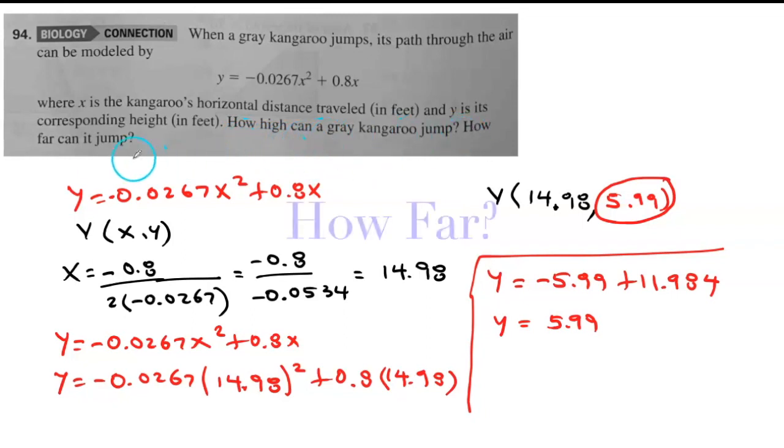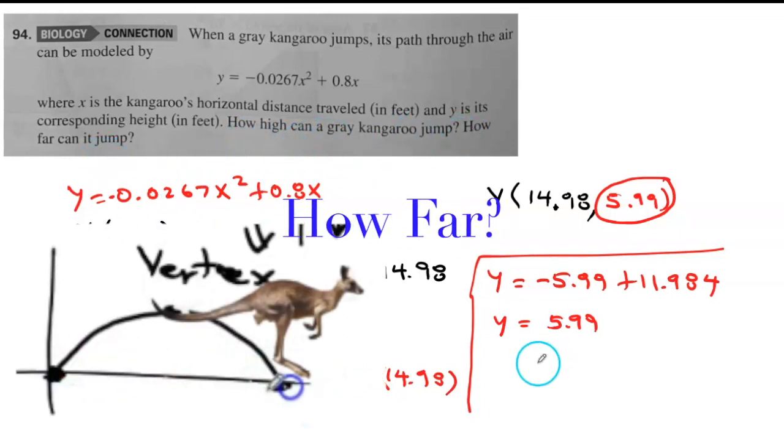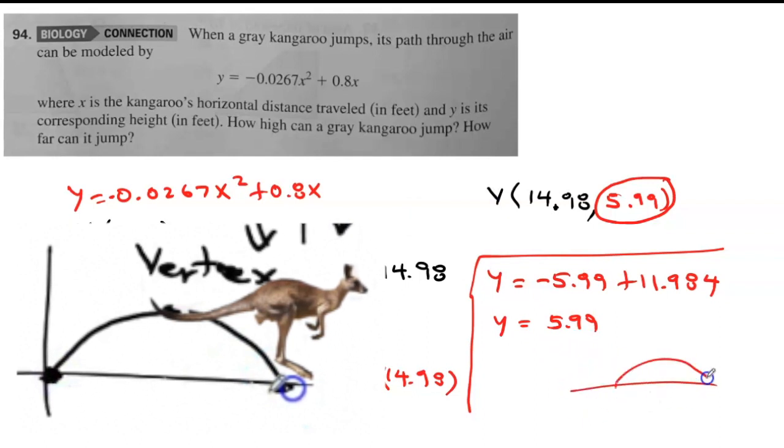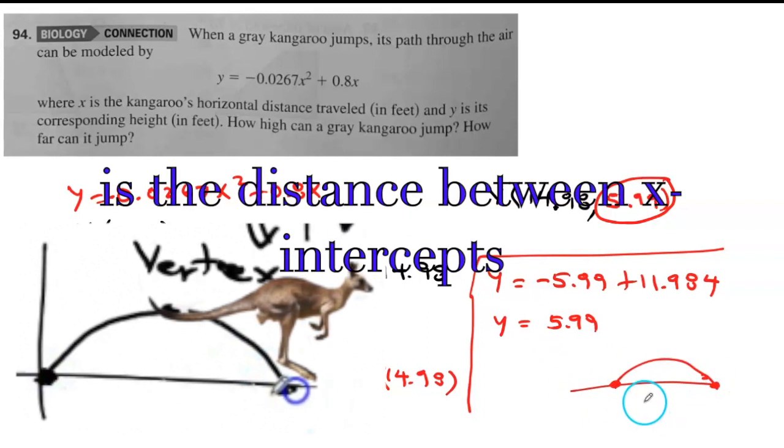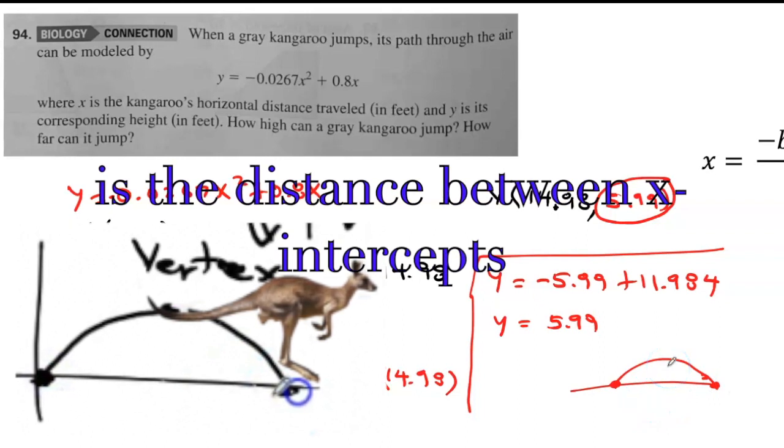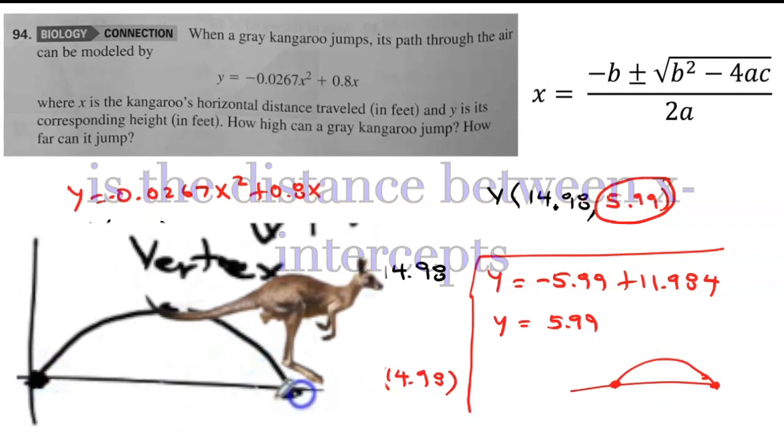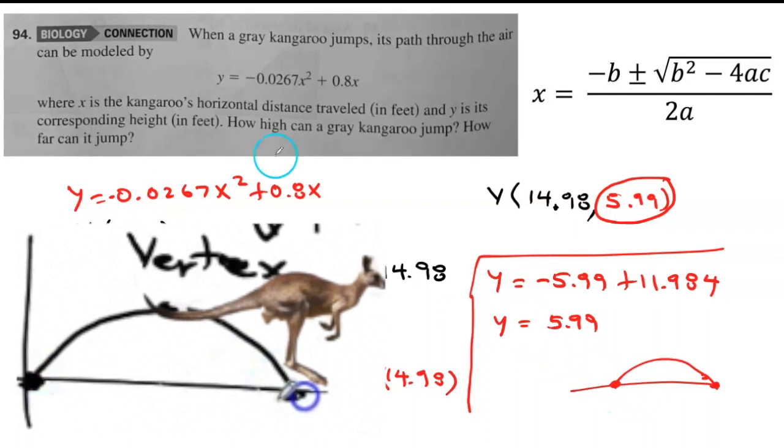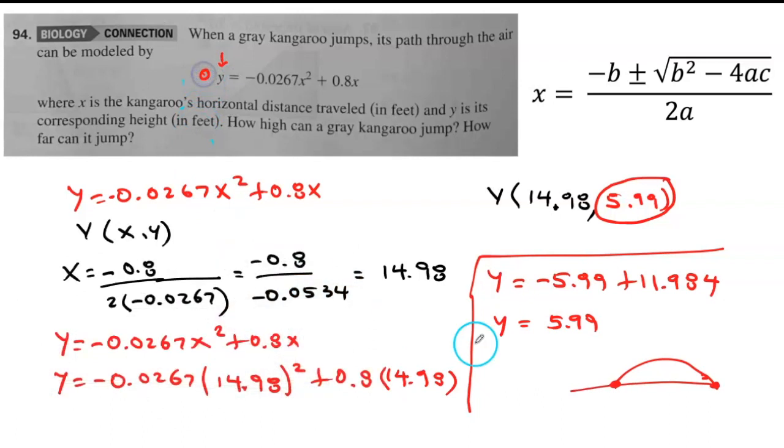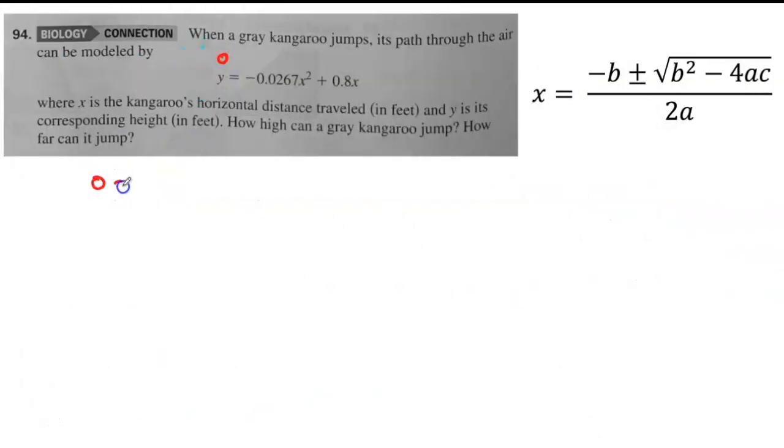The second question is, how far? To know how far, I've got to find my x-intercepts. For that, I'm going to be using my quadratic formula. I'm going to write this, make it equal to 0. Why? Because the height is 0 on the ground. That's why we make it equal to 0. Negative 0.0267x squared plus 0.8x. You can factor this out, or you can use the quadratic formula. Let's use the quadratic formula. The value of a is anything in front of the x squared. This is your a value, this is your b value. There's nothing at the end, so your c value, in this case, is 0.